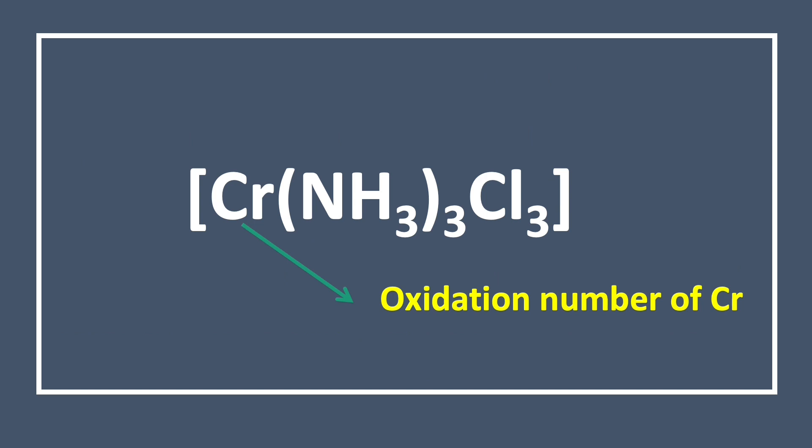In the coordination complex Cr(NH₃)₃Cl₃, chromium is the central atom. So we need to find the oxidation number of chromium here.